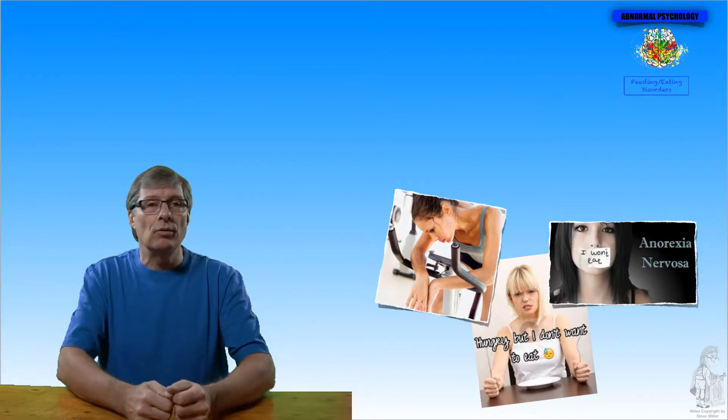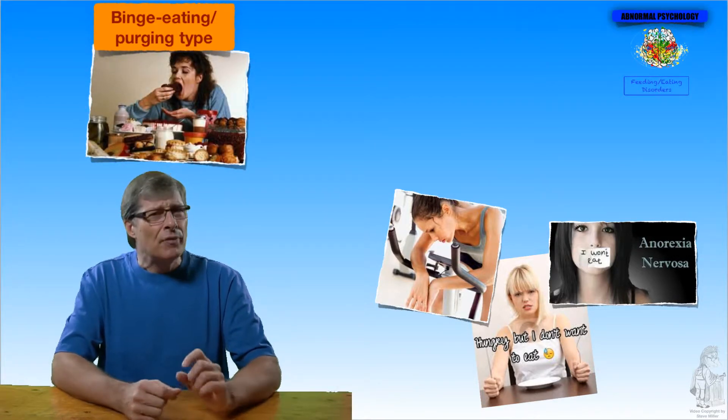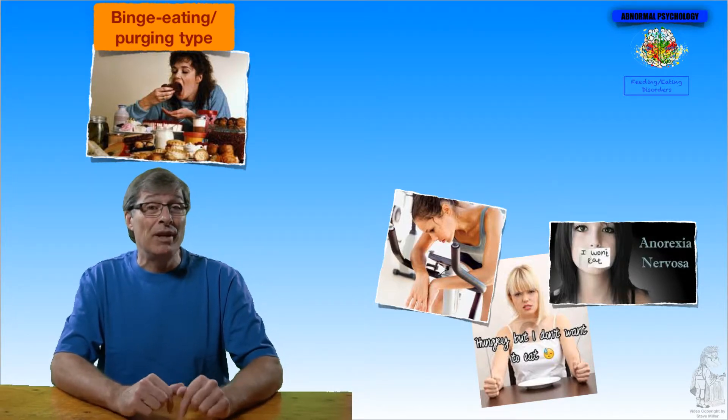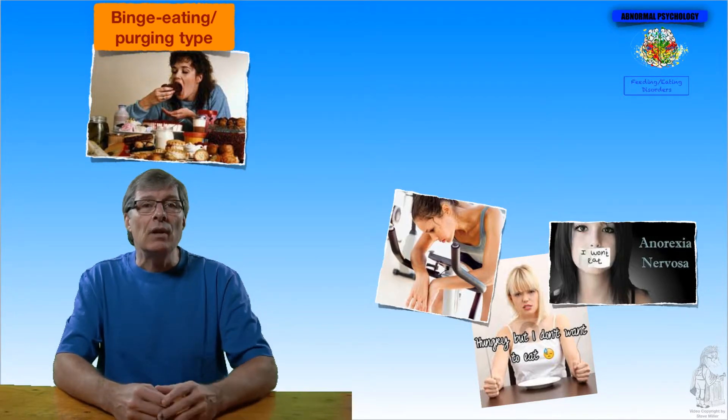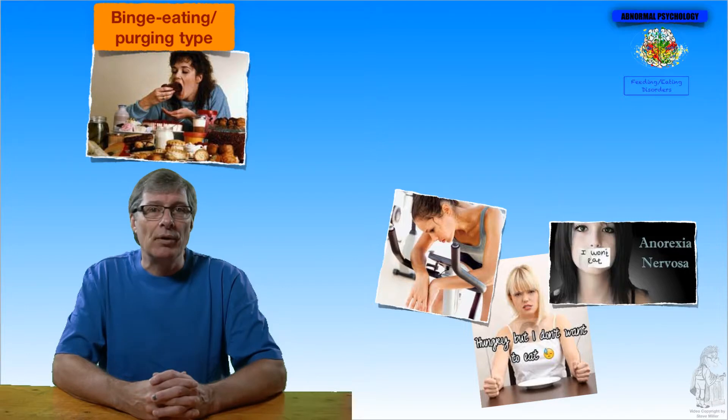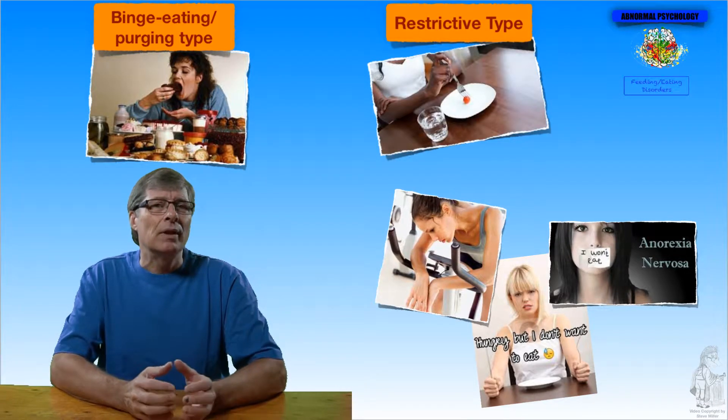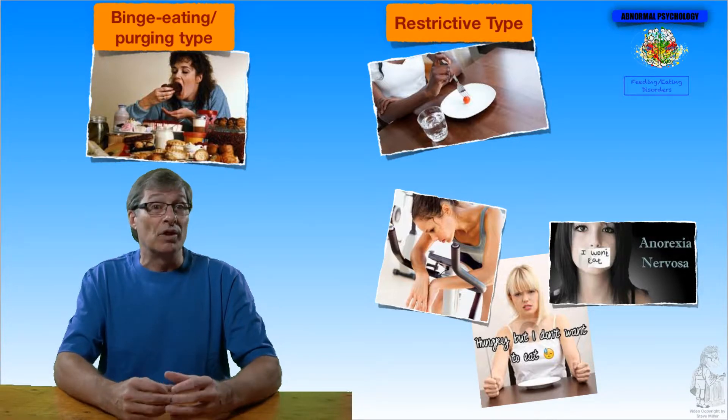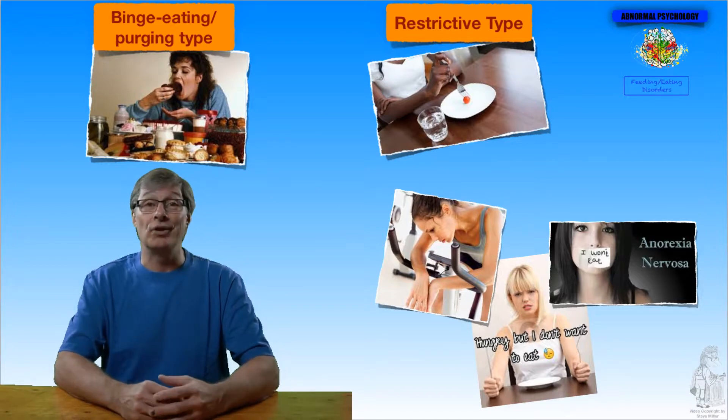When we talk about anorexia nervosa, there's two types. There's the binge eating purging type utilized to lose weight. But unlike bulimia, the person maintains their weight. And then the second type is restrictive type. Obsessive, tight control over their diet and appearance. They will restrict what they eat, maybe a soda biscuit per day and a half a glass of water or something to that effect. It's really quite alarming.